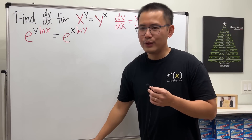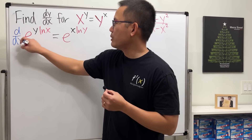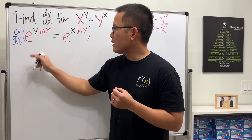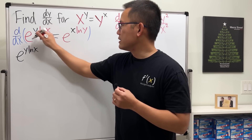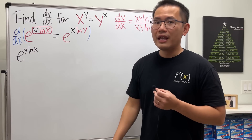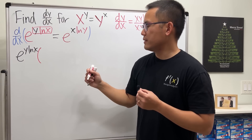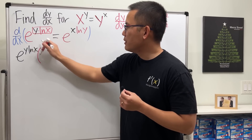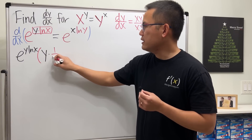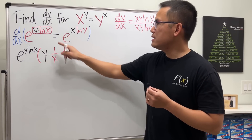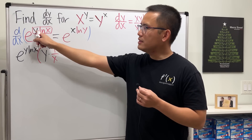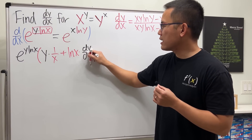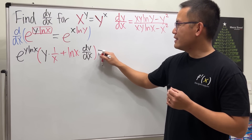Now with base e we can take the derivative much better. Let's go ahead and do implicit differentiation because y is not isolated. Taking the derivative of e to the something: it's e to the same thing, then use the chain rule and multiply by the derivative of the exponent. But the exponent is y times ln x, so we use the product rule — keep the first function and multiply by the derivative of the second, which is 1 over x.